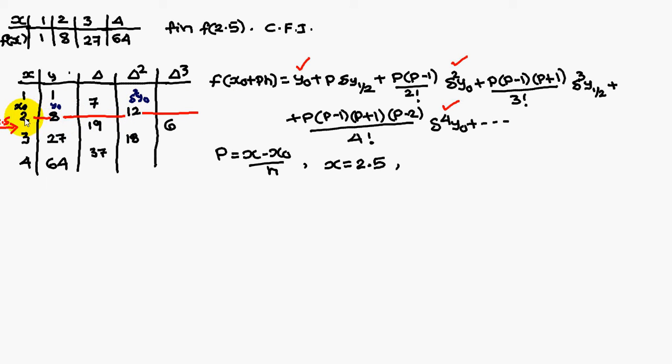Then these values, this you call it as x0, the corresponding value 8 as y0, and this one is you call it as the delta y half. This you call it as delta square y0. This you call it as delta cube y half.